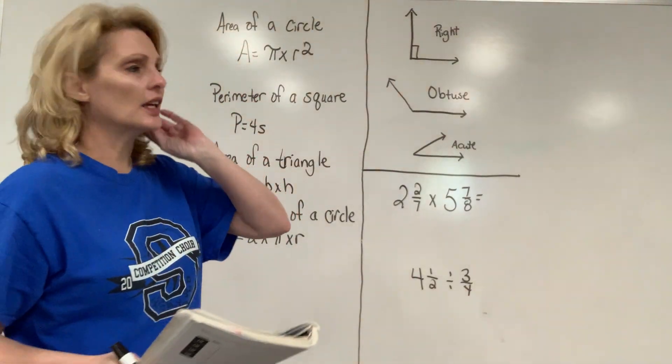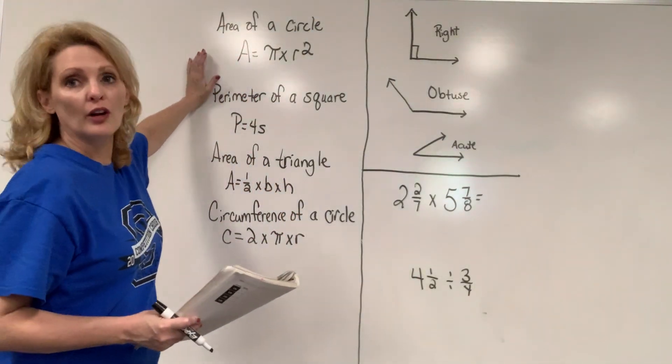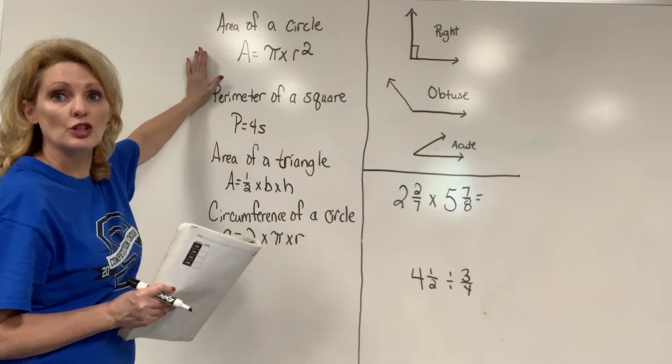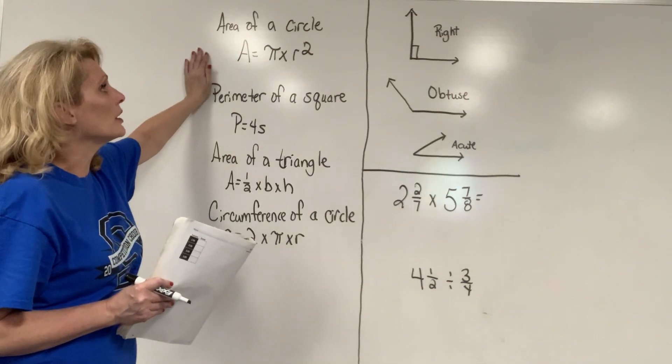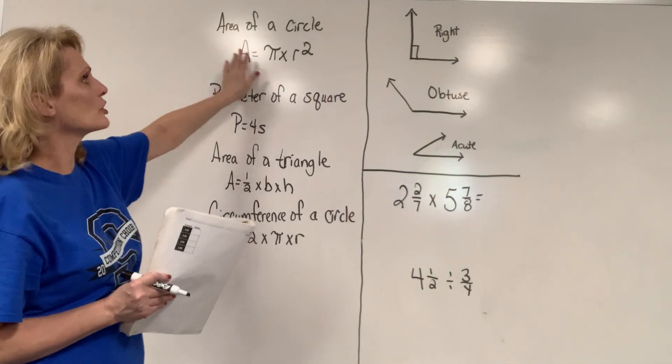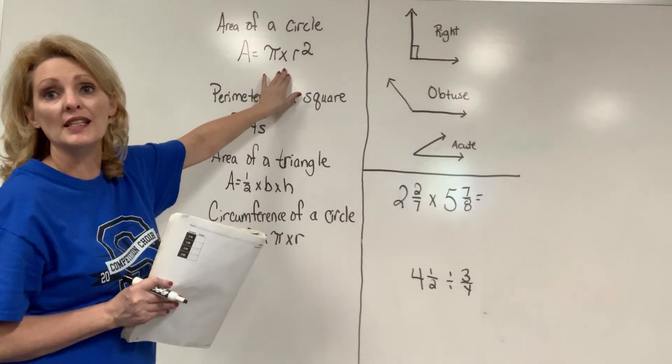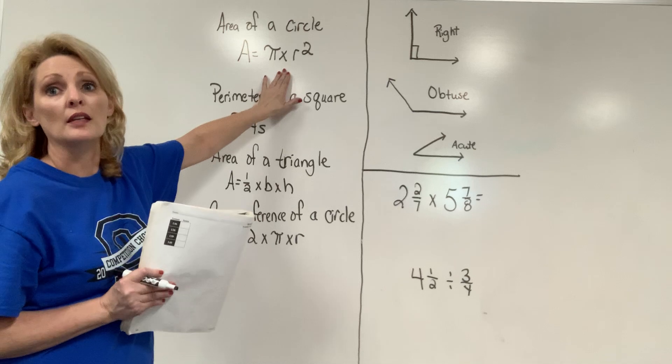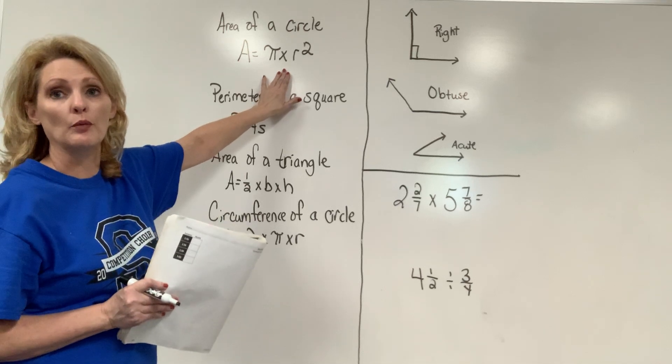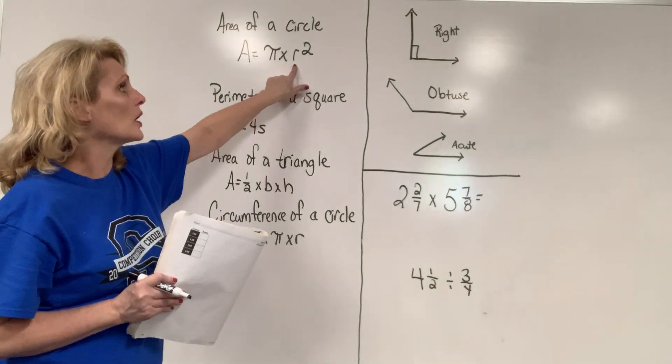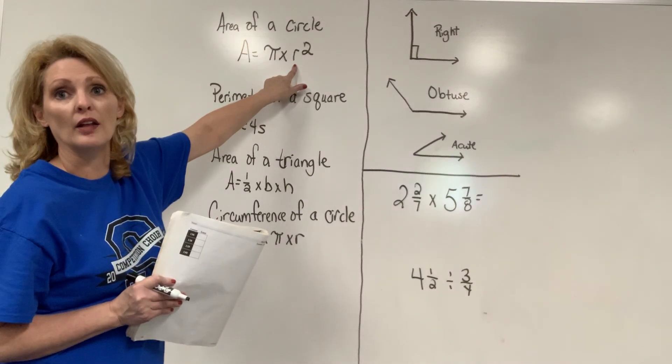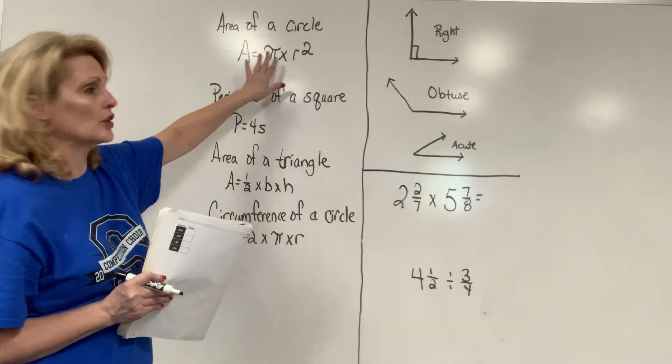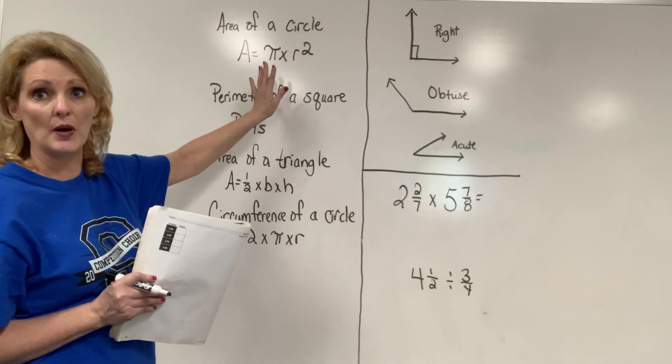So the very first thing is there will be a few formulas that you need to remember. Area of a circle. Make sure that if they give you the diameter, that you take that diameter and divide it by 2 and that will become your radius. And then you plug your radius in and then you'll square your radius and then finish your multiplication problem times pi.